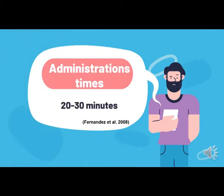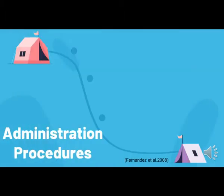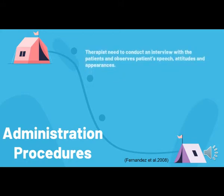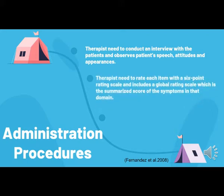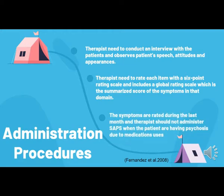Administration time is 30 to 60 minutes. Therapists need to conduct an interview with the patient and observe the patient's speech, attitude, and appearance during the interview. Therapists need to rate each item with a 6-point rating scale, including a global rating scale which is the summarized score of the symptom in that domain. Symptoms are rated during the last month, and therapists should not administer SAPS when the patient is experiencing psychosis due to medication.